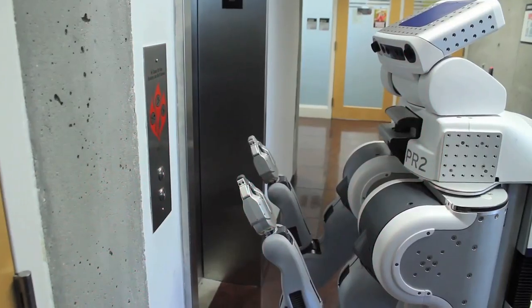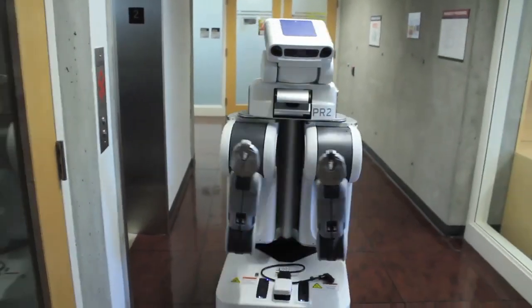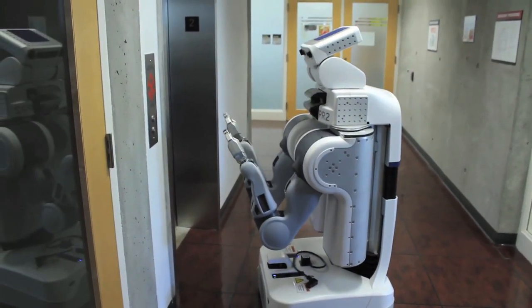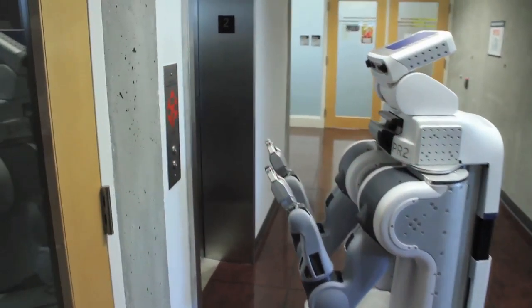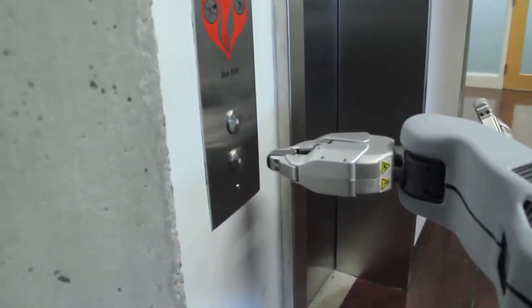For example, during button detection, if PR2 is too close to the wall for stereo vision to work, it will reposition itself and try again.